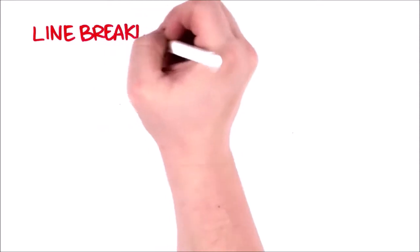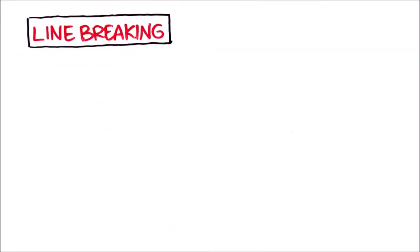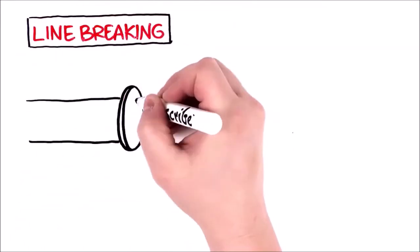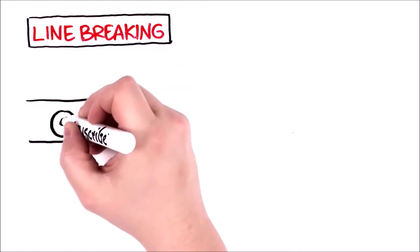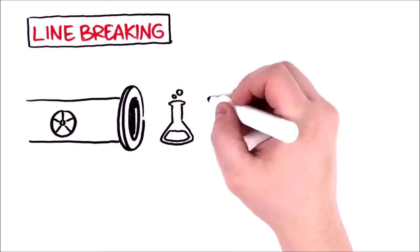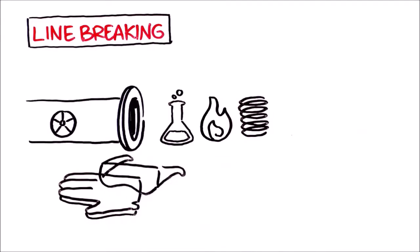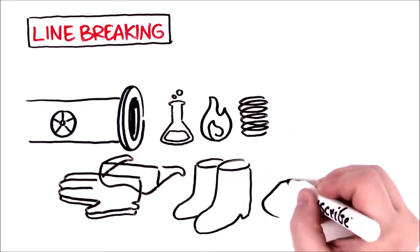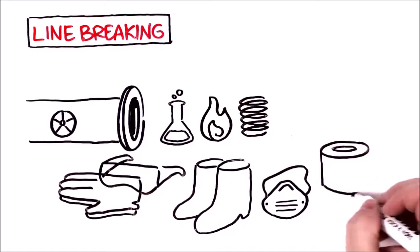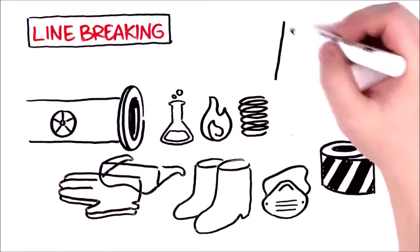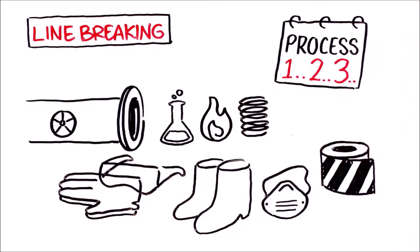Let's talk about unique circumstances you might encounter. Line breaking. This is a special type of hazardous energy control because it involves opening a pipe or vessel that could present a chemical, thermal, or pressure hazard. Take precautions, like using personal protective equipment when you need to open a hazardous pipe or vessel. And always understand and follow your site's specific line breaking process.